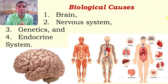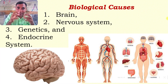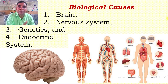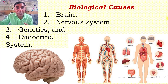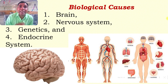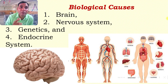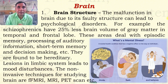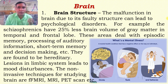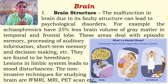So what are the prime body organs where disruption in their functioning can culminate into mental disorders? There are four major contributors: the brain, the nervous system, genetics, and the endocrine system.